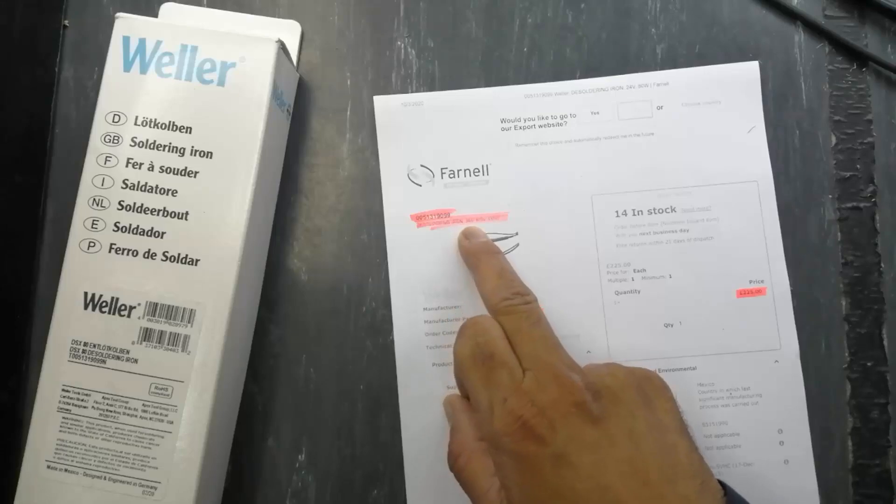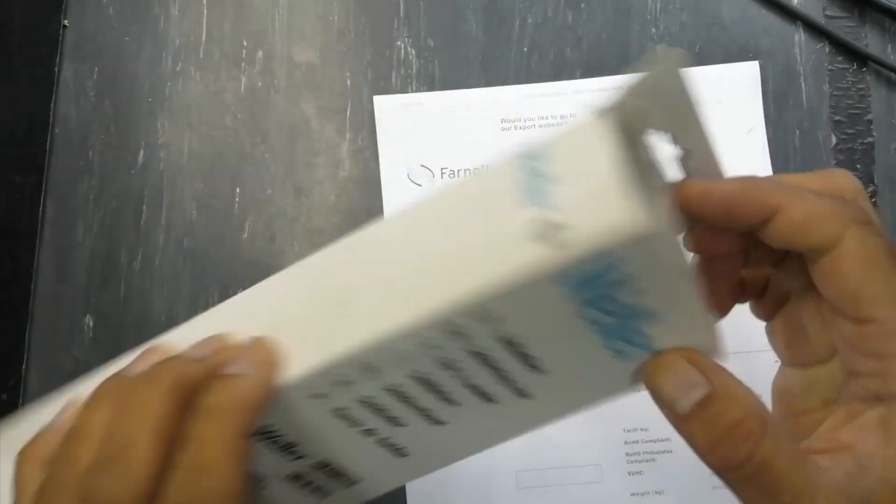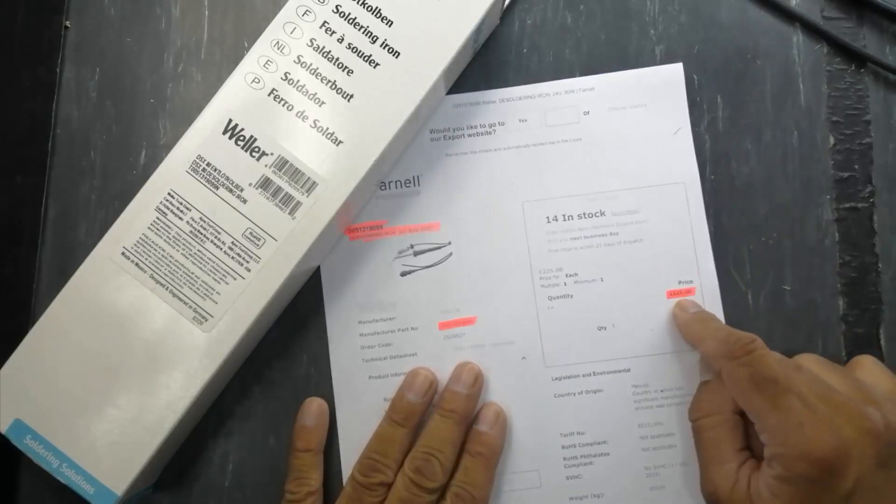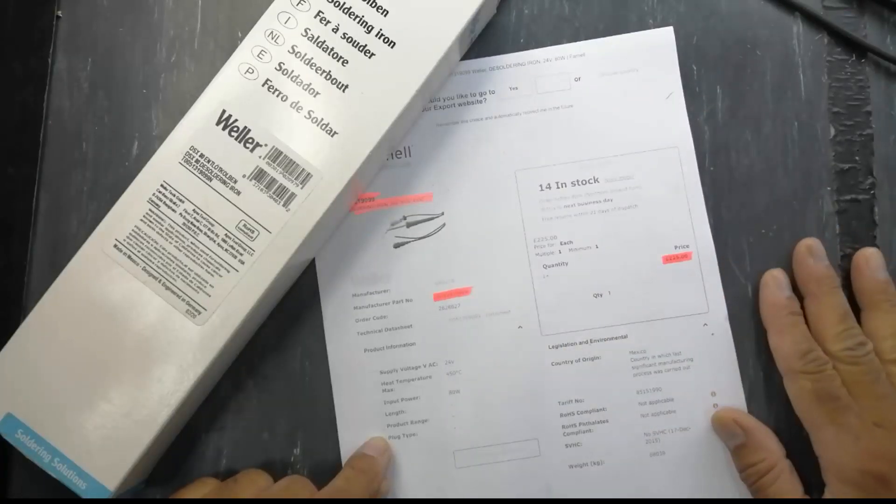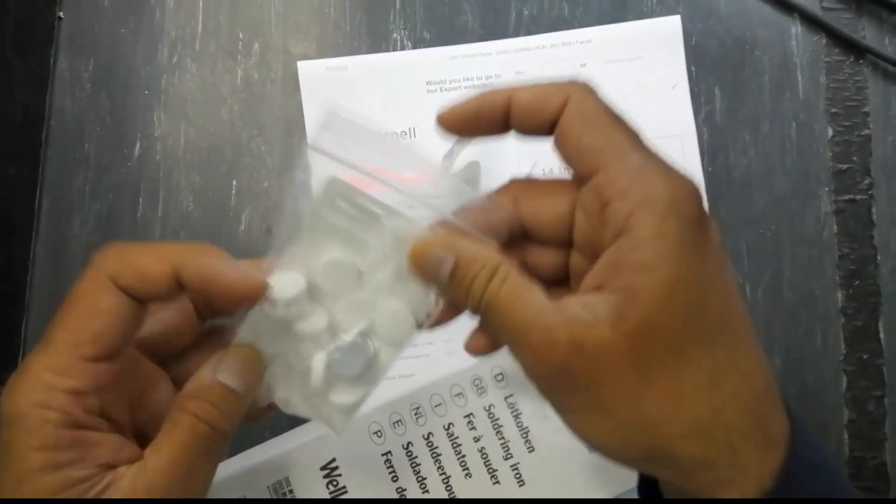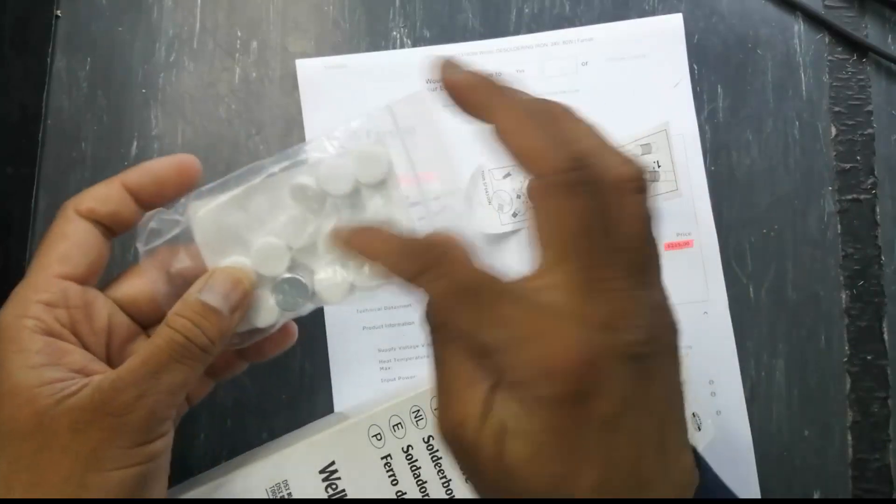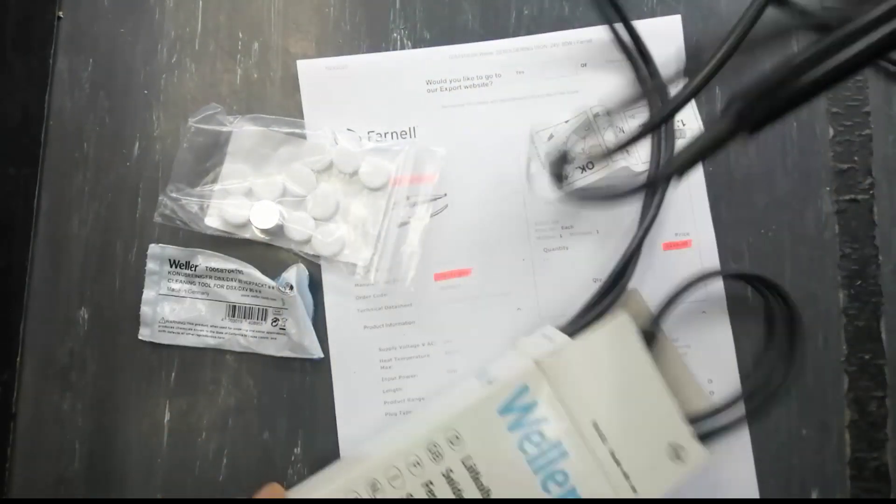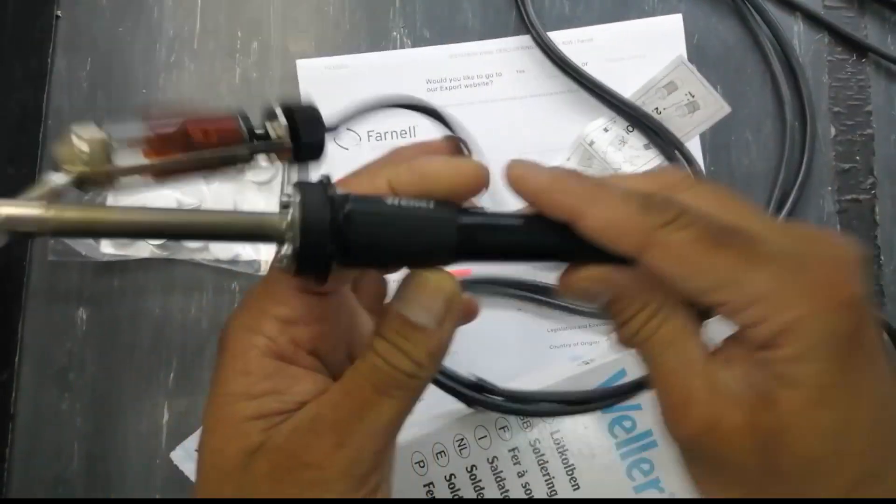24 volt, 80 watt, 450 degrees Celsius. It cost me £225 sterling, which is about $291. I received it with mineral filters, cleaning nozzle, and cleaning tool for DS X80. It's a brand new desoldering gun.